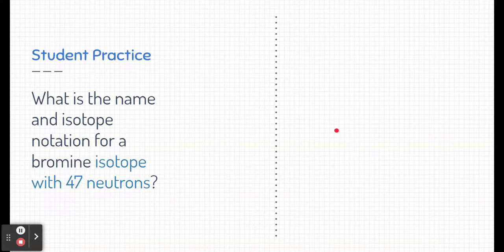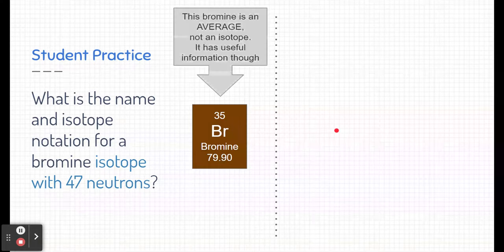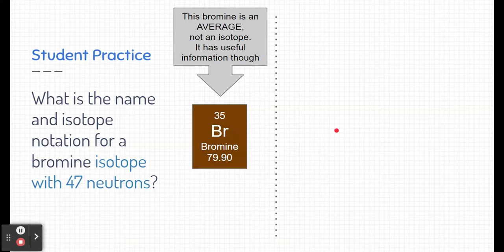Are you ready for that hint? Here is one hint. This is bromine on the periodic table, and there's some information that we need here. But remember, this bromine on the periodic table is the average bromine, not the isotope. So, we'll need some information from it, but we don't need all the information from it.